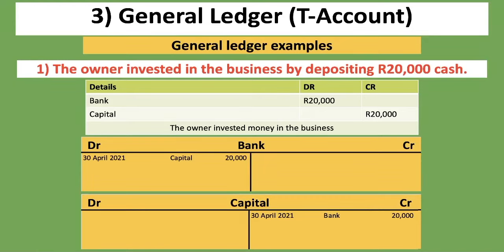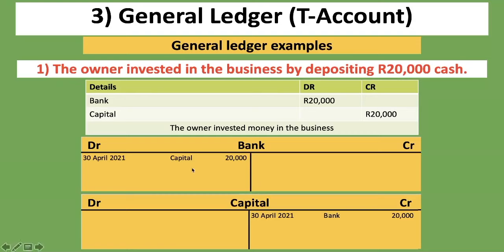You can see how the general ledger relates to the general journal. You do not need to complete the journal entry before doing the T-account — I'm just showing the connection. If you understood lessons one and two, it will be easy to apply those principles here. The T-account is for specific accounts. Bank is an asset that increases on the debit side, and you put the second account involved in the transaction as the detail.